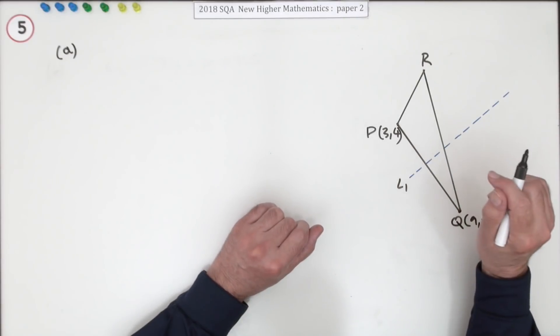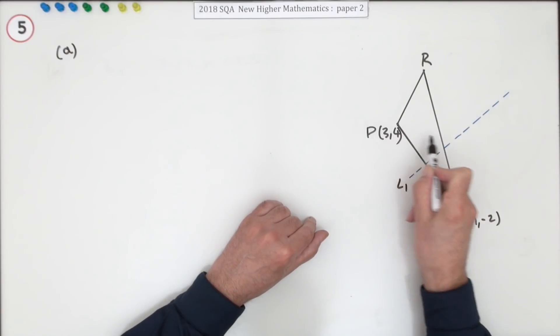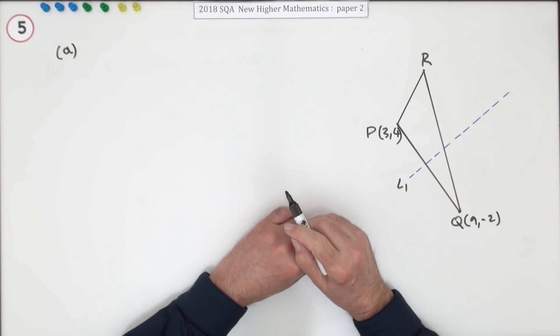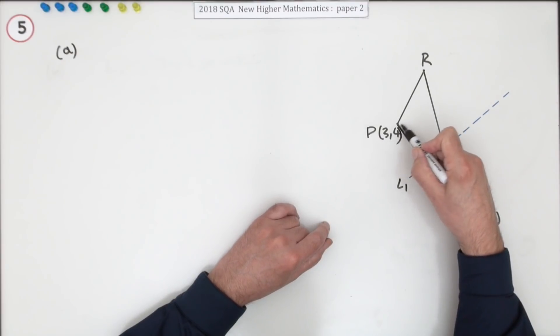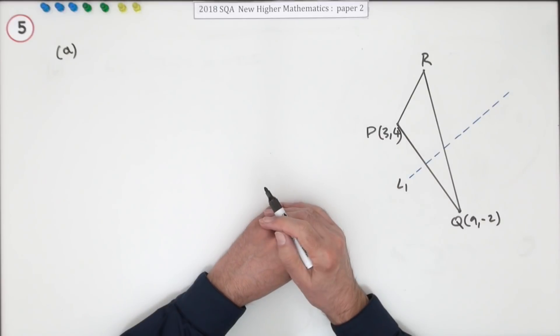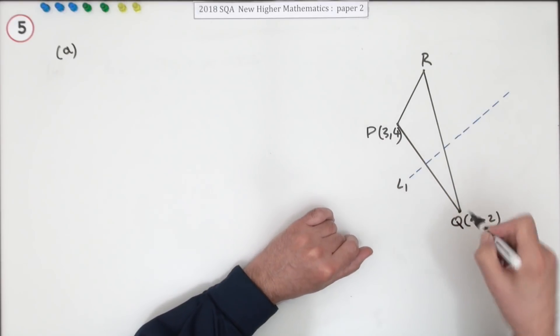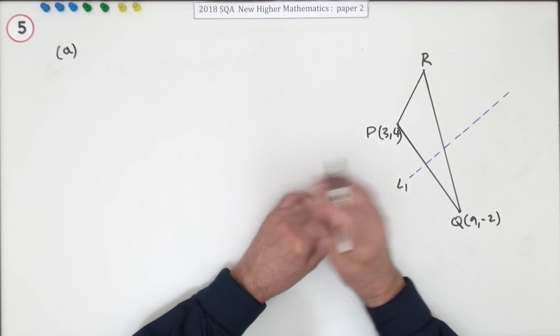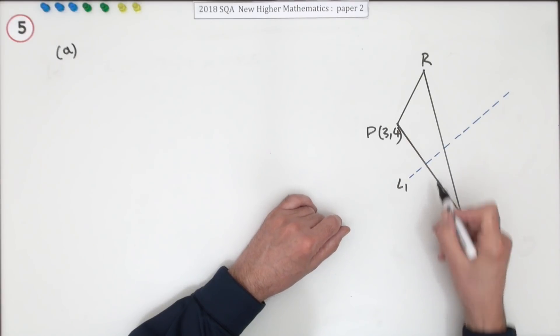There are three lines you should know in a triangle. There's the median, which goes from a vertex to the midpoint of the other side. There's the altitude, which goes from a vertex perpendicularly to the other side. And there's this one, which doesn't necessarily go through one of the vertices unless it's isosceles, which is the perpendicular bisector. So named because it's perpendicular, so it's at right angles, and it bisects the side.